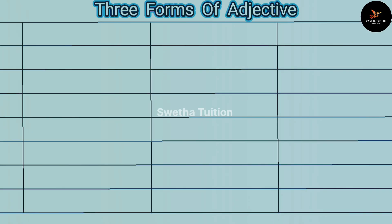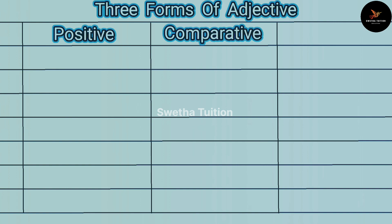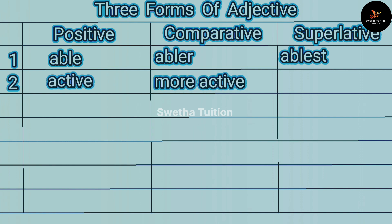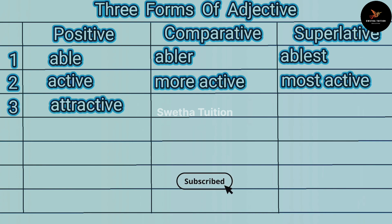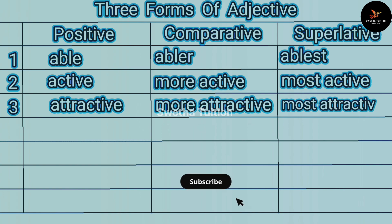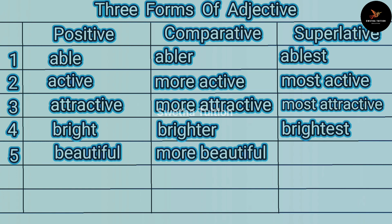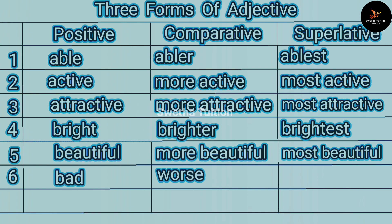Number one: able, abler, ablest. Number two: active, more active, most active. Number three: attractive, more attractive, most attractive.